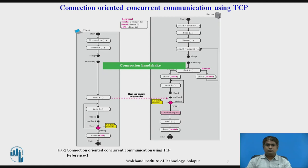Here we use one call to the send function, assuming that the data can be sent with one call based on the type of application. The client then calls the receive function, which is blocked until the segment arrives and the data are delivered to the process by TCP. Although the data are sent by the server in one single call to the send function, the TCP at the server side may have used several segments to send data. This means we need to call the receive function repeatedly to receive all data. The loop can be controlled by the return value of the receive function.